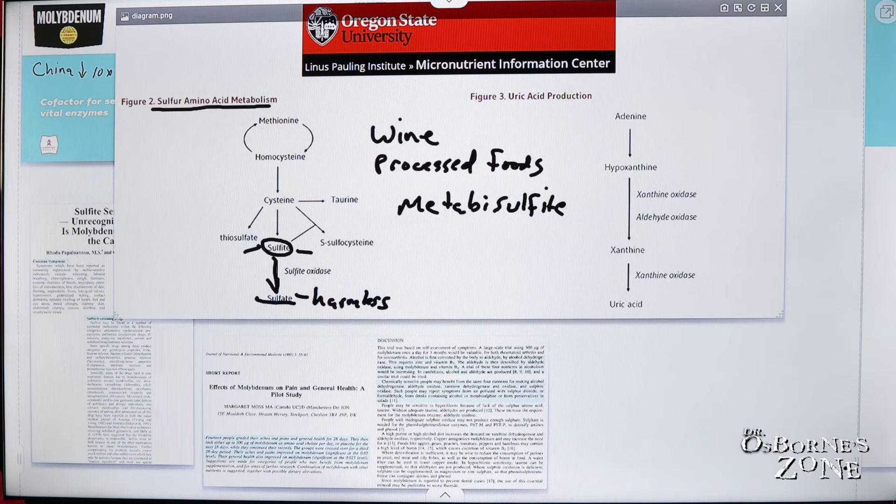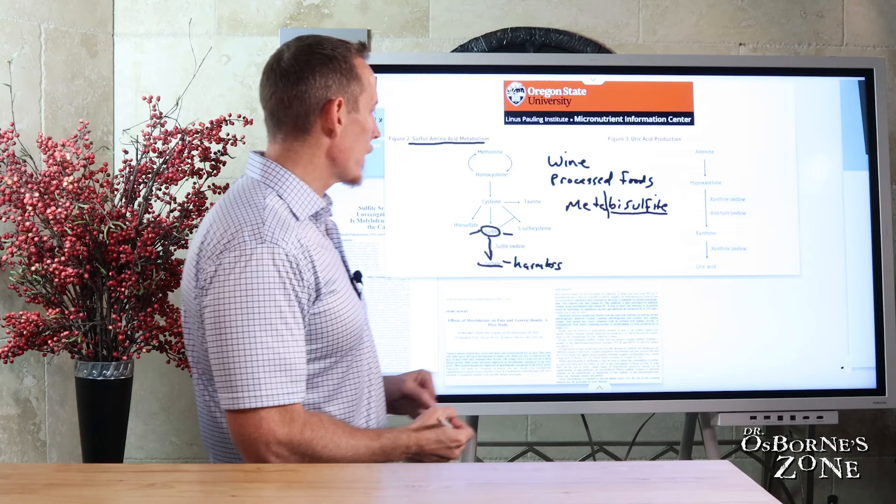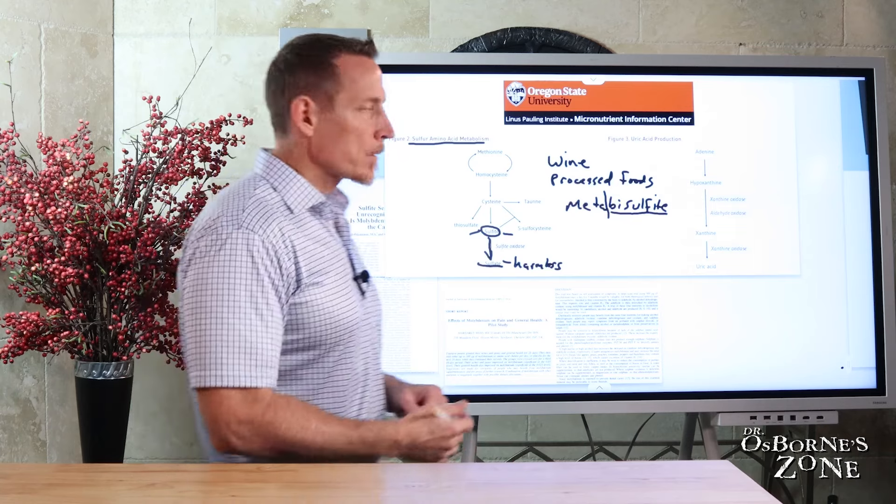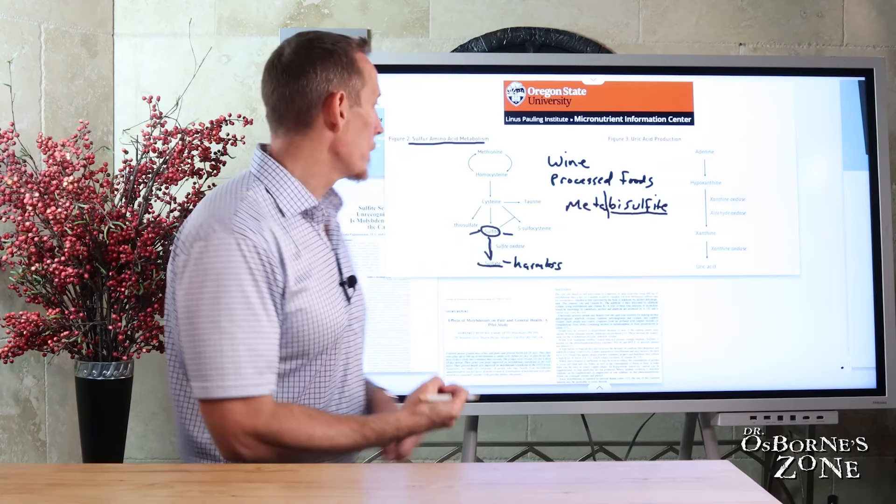Sometimes you'll also see this term, we split the word bisulfite, as an additive in food. So if you find that when you eat foods that contain sulfites, metabisulfites, bisulfites, it's very possible that you might have a problem with molybdenum.